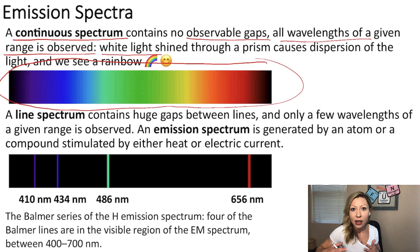So what is the difference between a continuous and the line spectrum? In a line spectrum, you are going to have huge gaps between lines and only a few wavelengths of a given range is observed, just like it is shown in this spectrum.